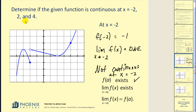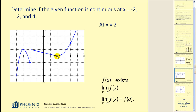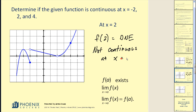Let's now consider this function at x equals 2. We must satisfy the three conditions, and right away we can say that f of 2 does not exist. Therefore the function is not continuous at x equals 2. But the type of discontinuity here is removable — if we were to redefine f of 2 we could make this function continuous.